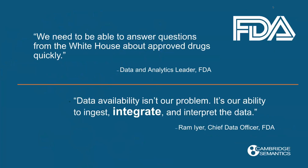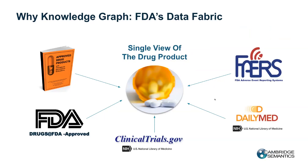One of the recent wins that we're very proud of is with the Food and Drug Administration. They came to us and said it's very difficult for us to answer questions quickly because our data is in many different applications and databases — we have siloed data. This is a common problem across every organization. It's not the availability of the data, but the ability to ingest, integrate, and interpret the data that is the challenge. That's where scalable enterprise knowledge graphs come to the rescue, and our Anzo knowledge graph platform can help solve this problem by automatically linking together all of these different sources.